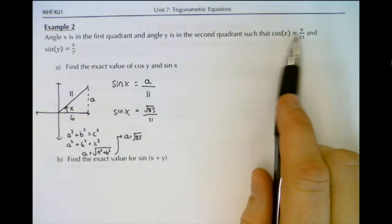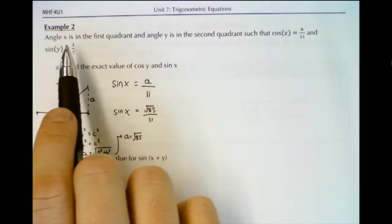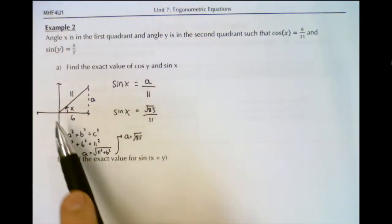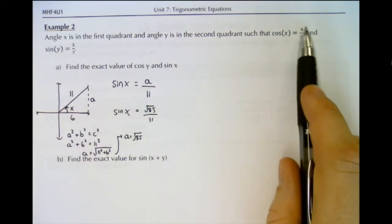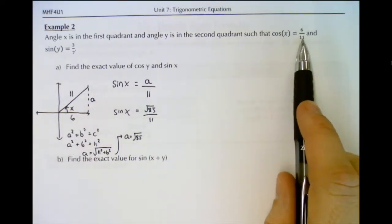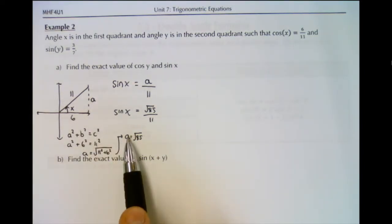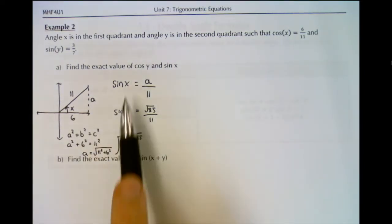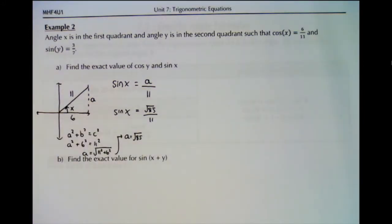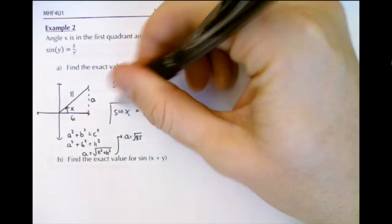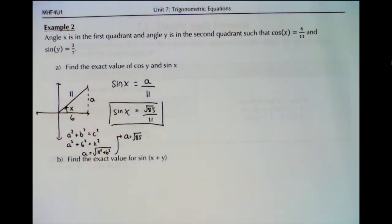Therefore, sine x is root 85 over 11. What we did: we knew cosine of angle x was 6 over 11 and that x was in the first quadrant, so we graphed angle x in the first quadrant, labeled the triangle using the adjacent and hypotenuse sides, found the third side using the Pythagorean theorem, and used that third side to write the sine ratio, which is opposite over hypotenuse.